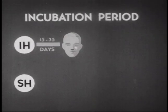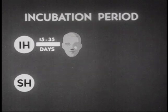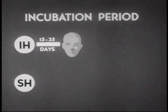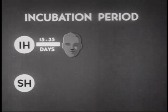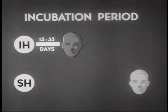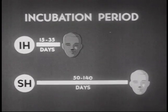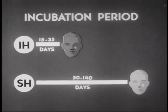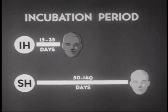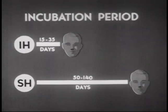The length of the incubation period. For the IH virus, it is 15 to 35 days to the appearance of jaundice. And for the SH virus, 50 to 140 days to the appearance of jaundice.